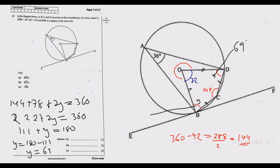Let's review the answers found so far. Angle BOD is 72 degrees — done. Angle BCD we've already found: it's 144 degrees. See how quickly these can be found using circle theorems.